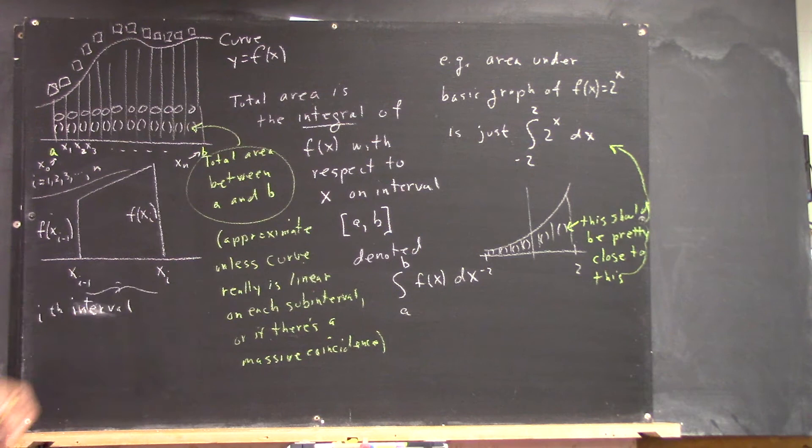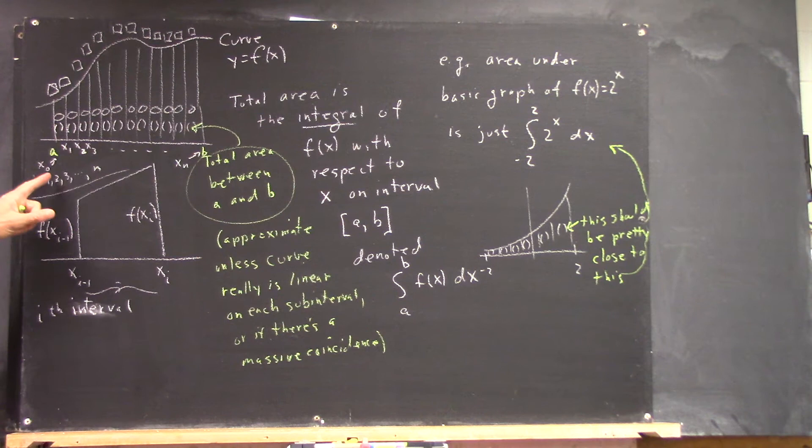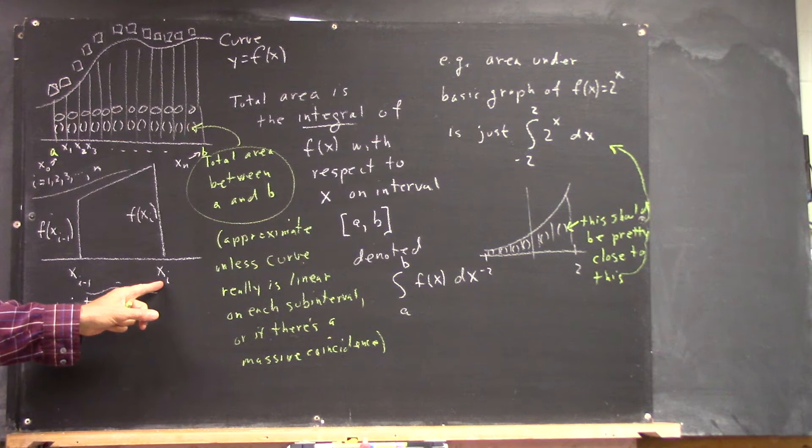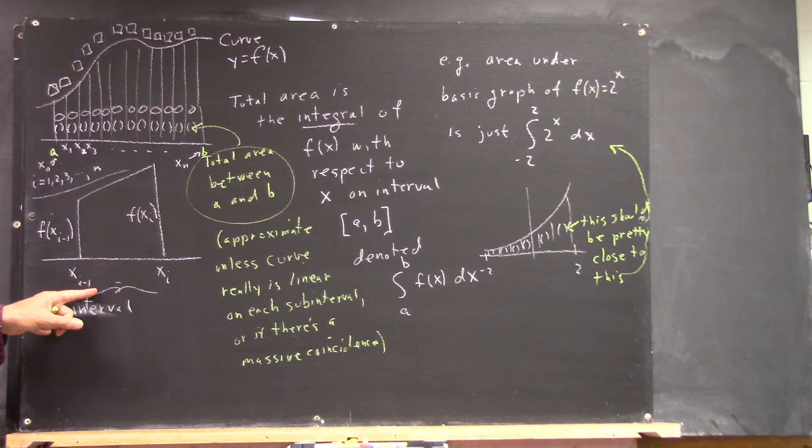Like, where does the third interval start and end on my picture here? It goes from x2 to x3, right? The first interval goes from x0 to x1. The second goes from x1 to x2, and the third one goes from x2 to x3. So if you want the i-th interval, it ends at x sub i, meaning it starts at x sub i minus 1. That make sense?